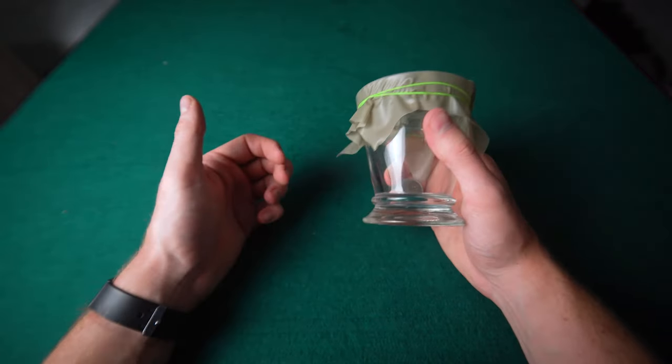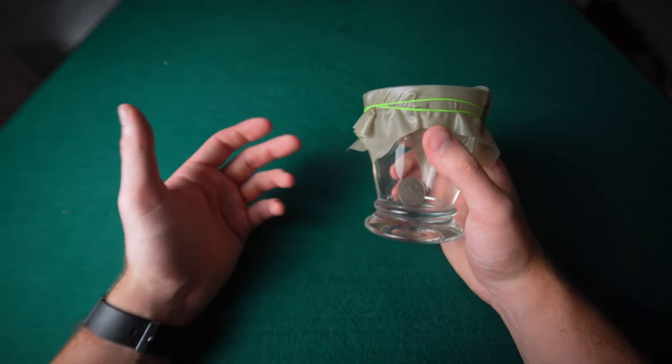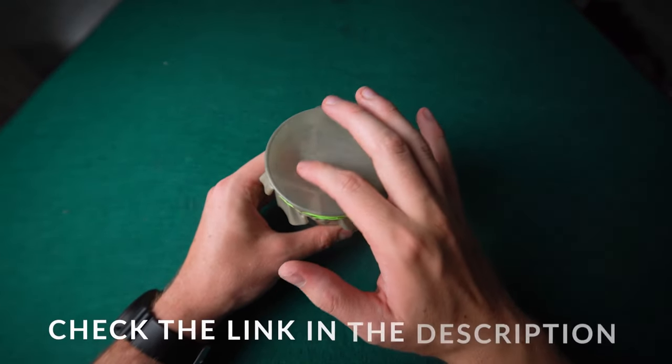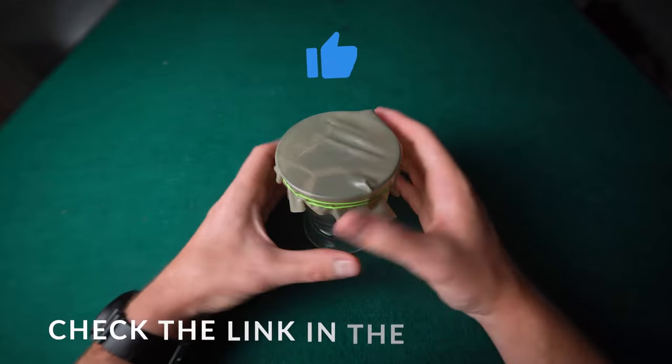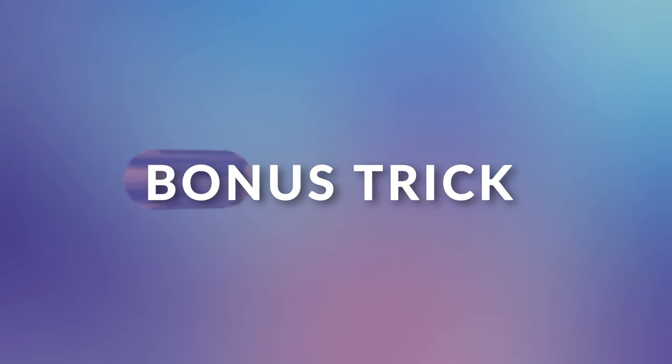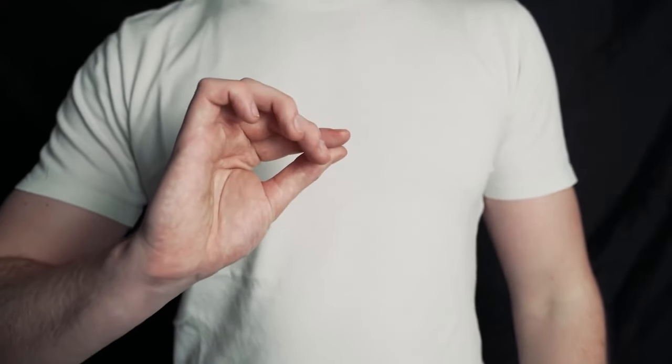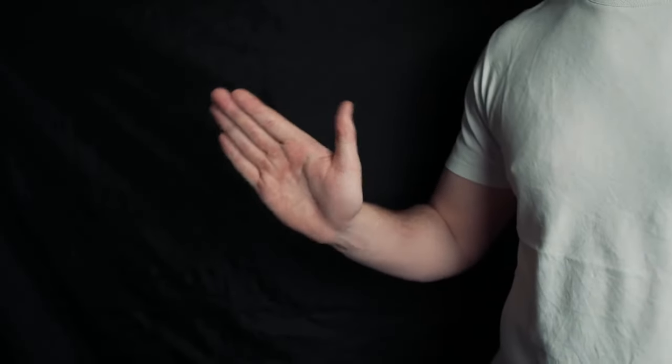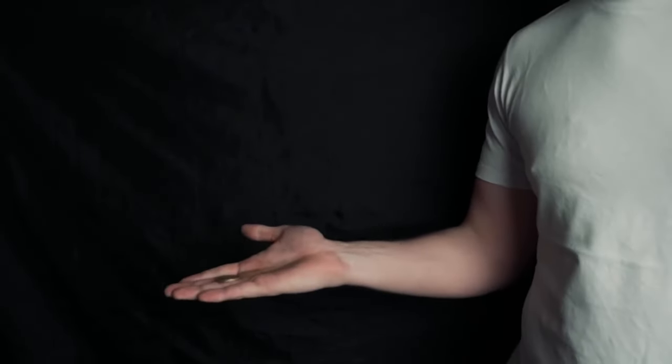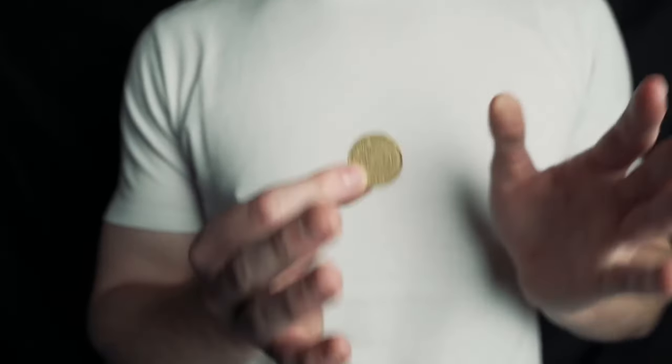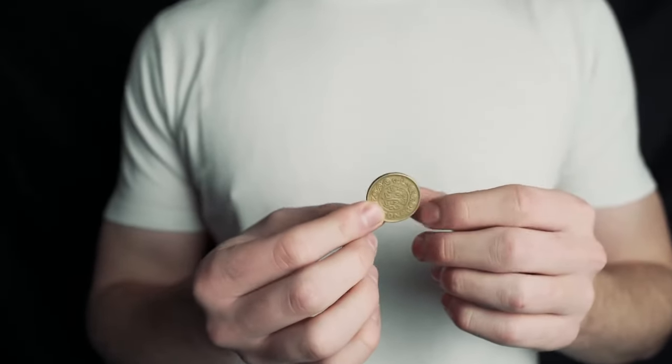This is just the ultimate coin trick for beginners or somebody just wants to learn a really amazing trick that requires no skill. So I've left a link down in the description to where you can buy this rubber and yeah I hope you enjoy this trick. The magician takes a coin, vanishes it and then makes it reappear. To learn this trick you need to break it down into three parts, practice each part individually then put them all together at the end.